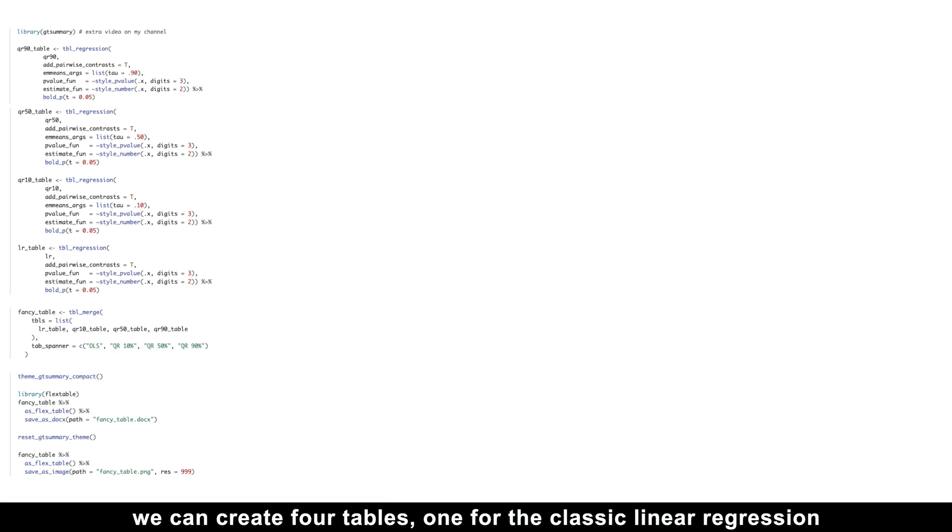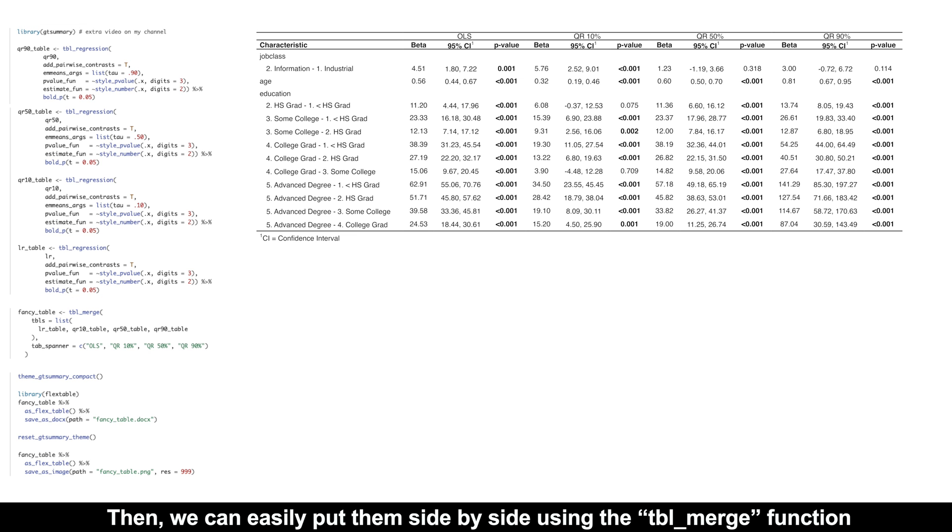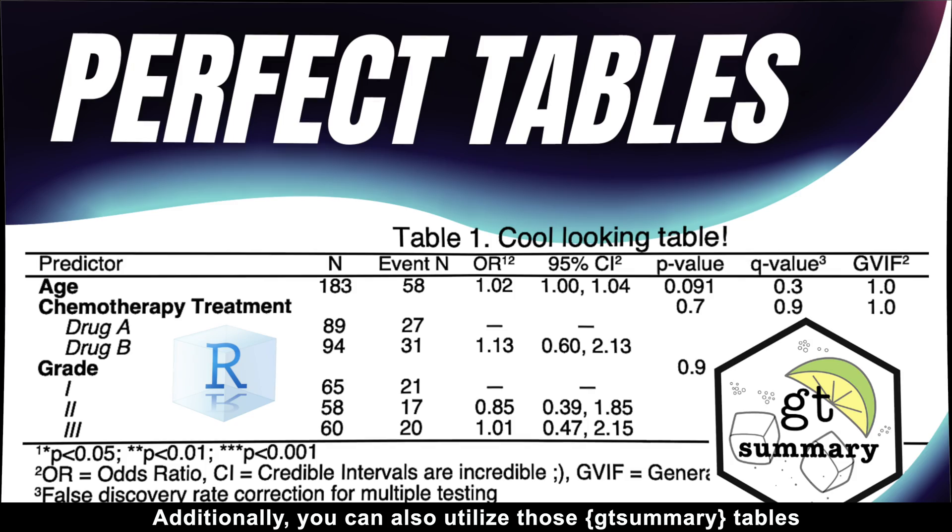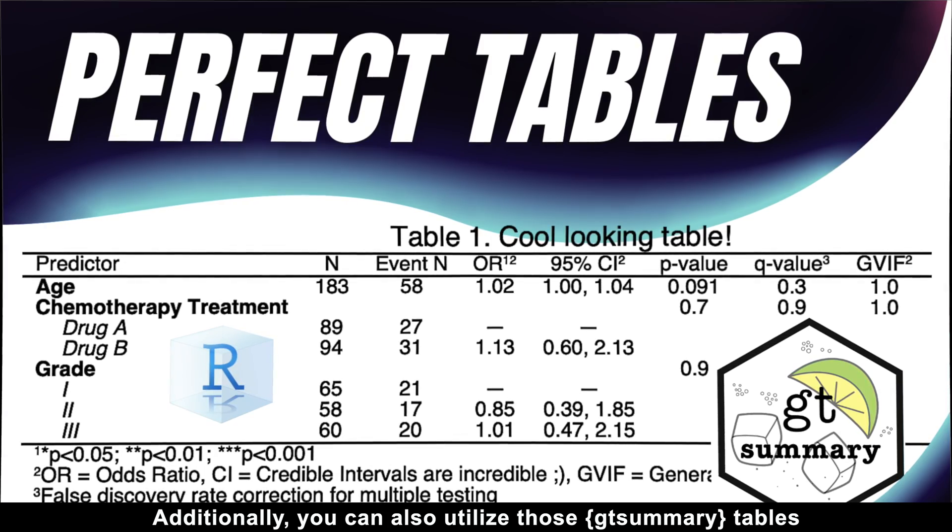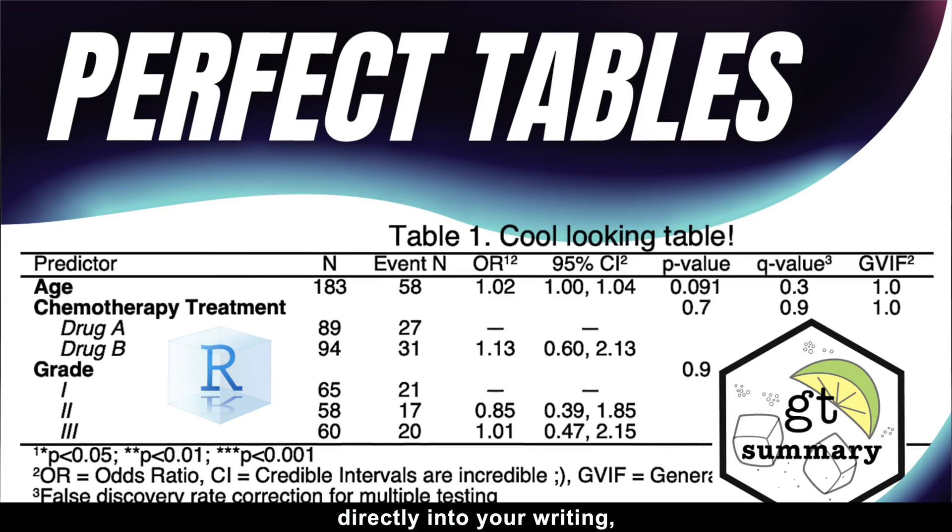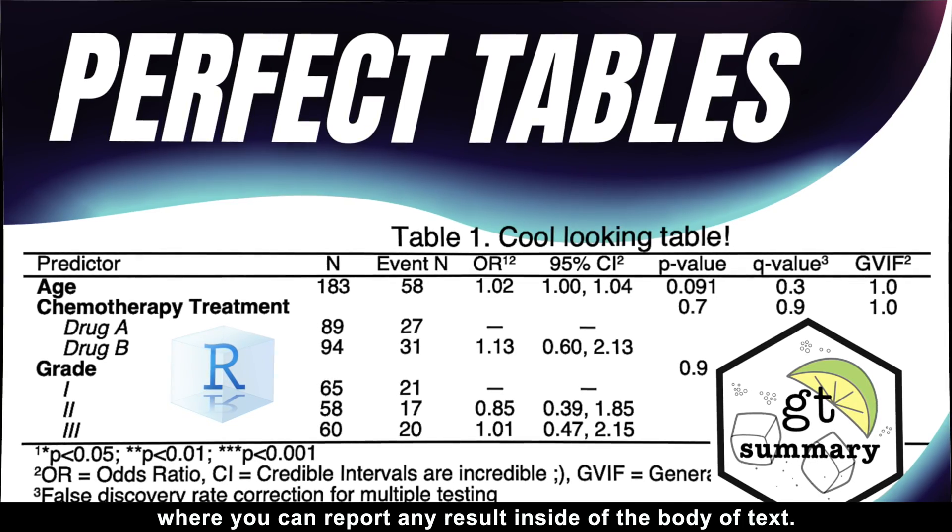Using just a few simple arguments inside the tbl_regression function will produce a perfect table for any model. For example, we can create four tables, one for classic linear regression, and three for the quantile regressions. Then we can easily put them side by side using the tbl_merge function and save them in either Microsoft Word or PNG format for our publication. And there are actually so many cool things the gtsummary package can do that I dedicated the entire video to it, so feel free to check it out if you are interested.